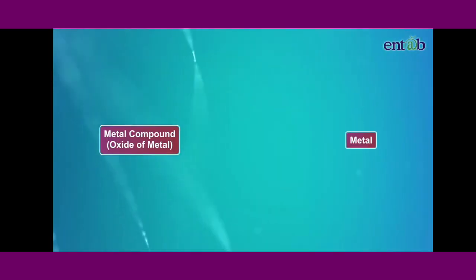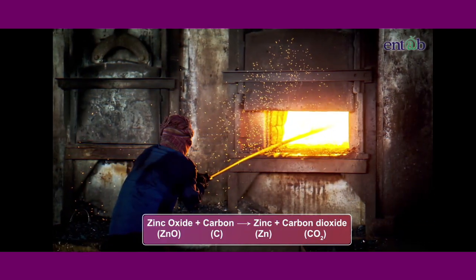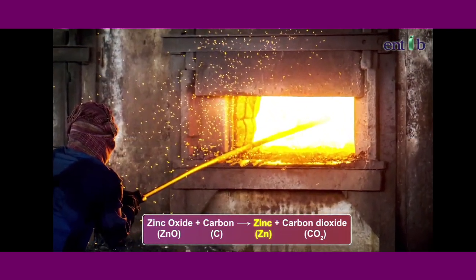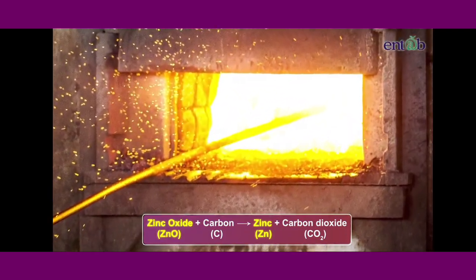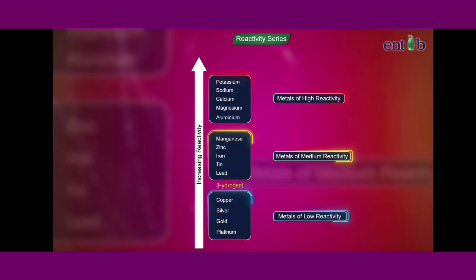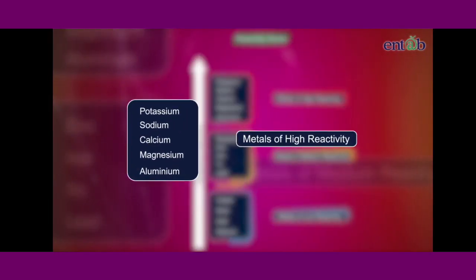So, obtaining metals from their compound is done by the process of reduction. Zinc metal is extracted from its oxide by reducing it with carbon or coke. Sometimes, a more reactive metal is also used to induce the reduction of metal oxides.